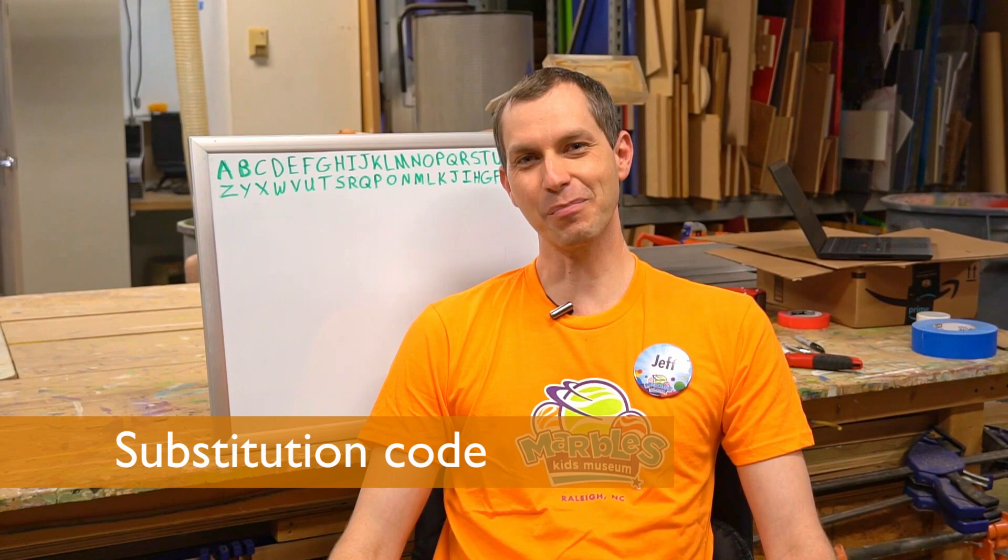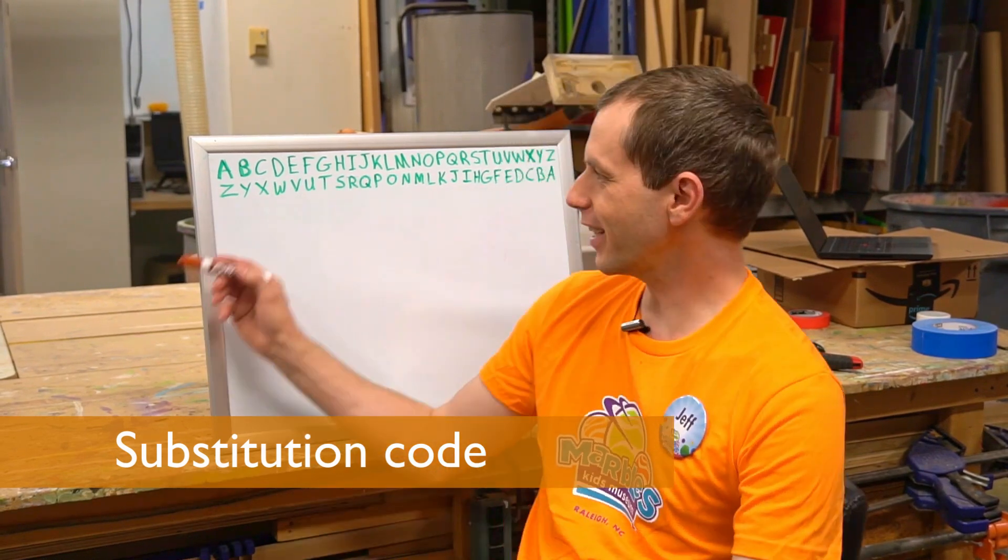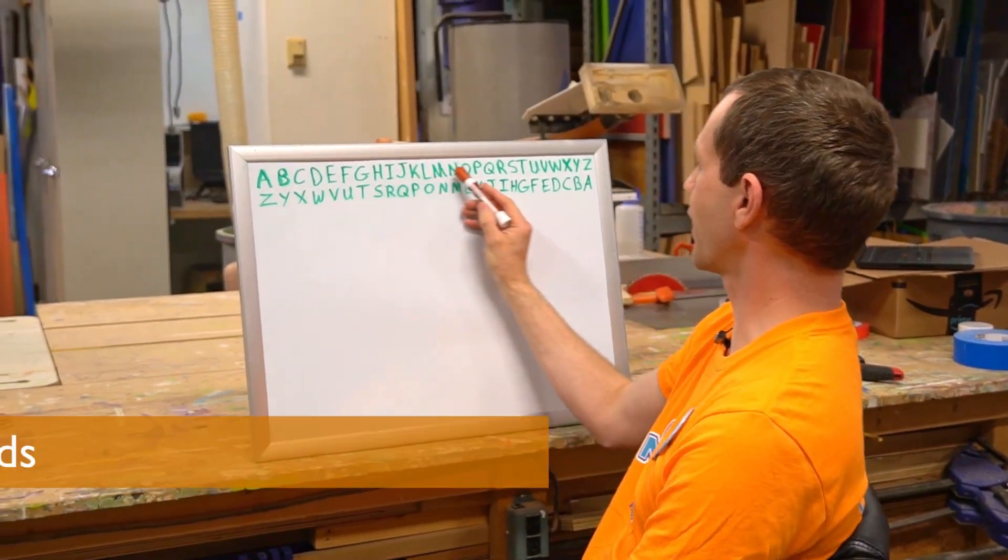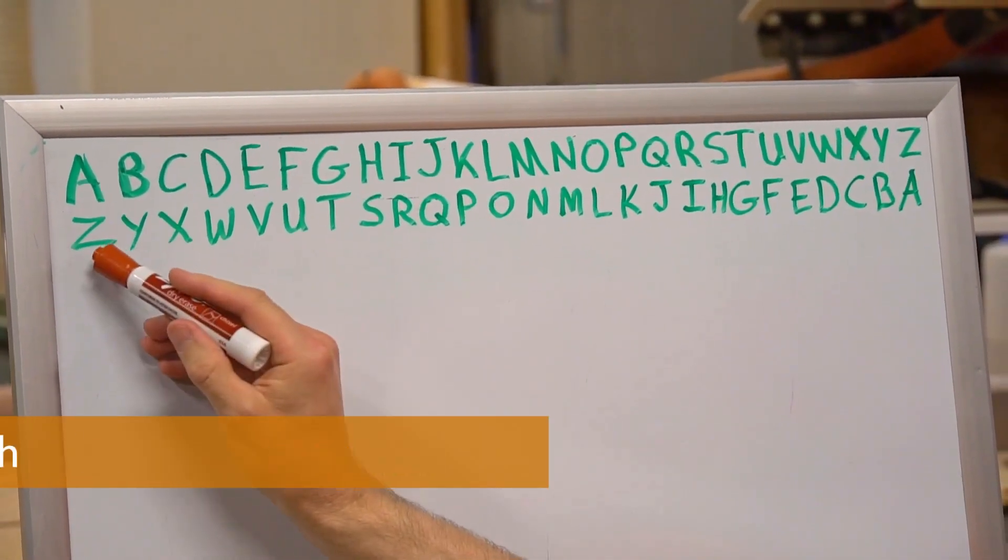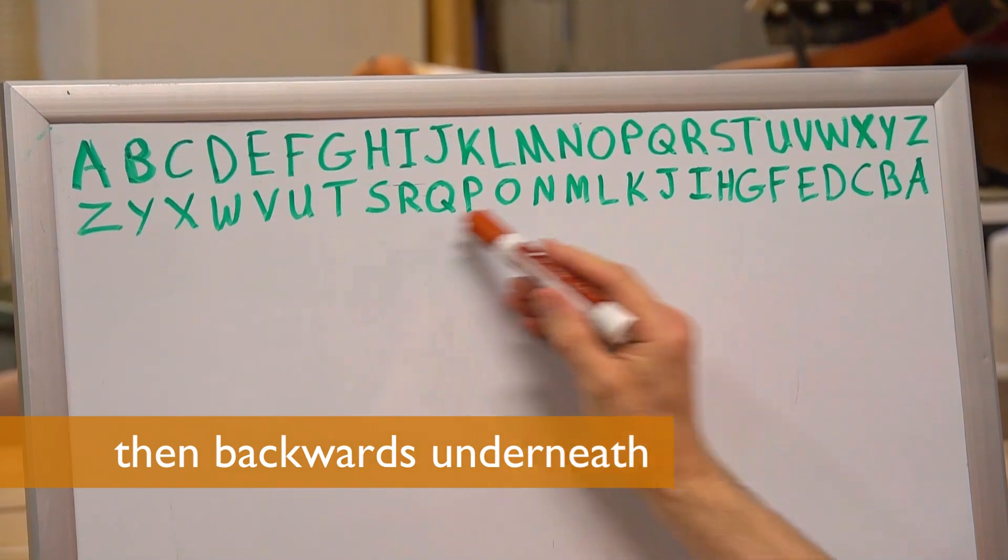Our first one is a simple substitution code. I've written the alphabet out forwards on the top line, A through Z, and then below that, so that each letter lines up with the one above it, I've written the alphabet backwards, Z through A.